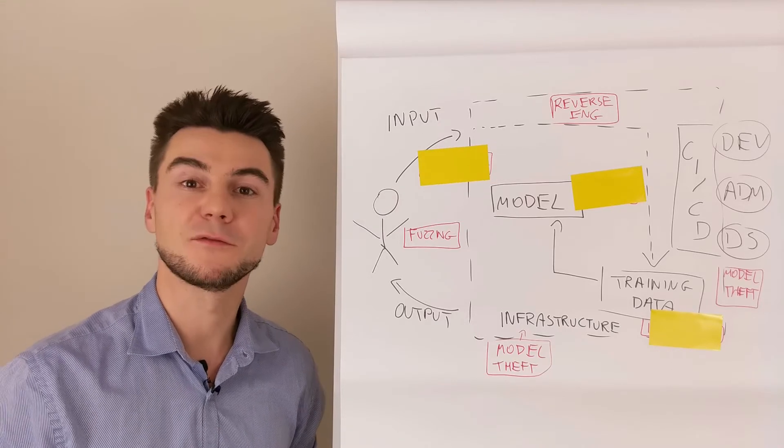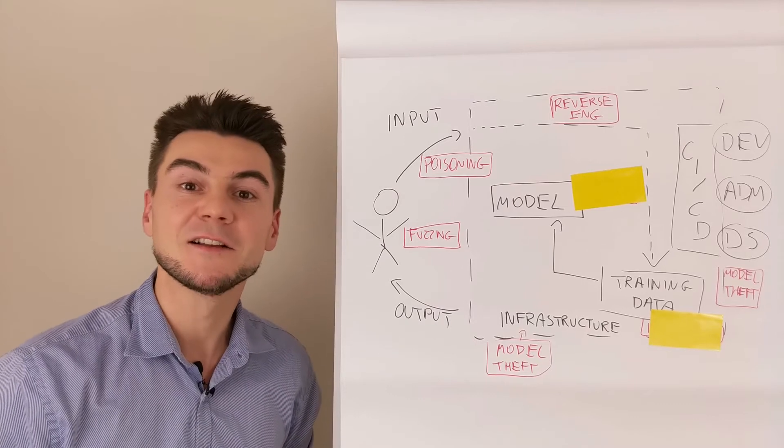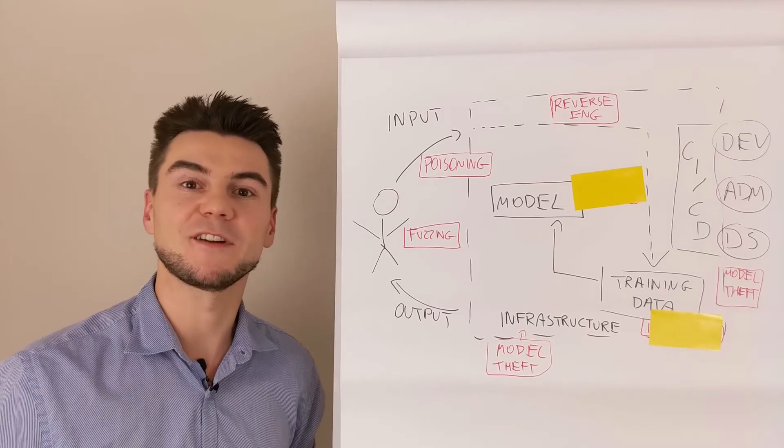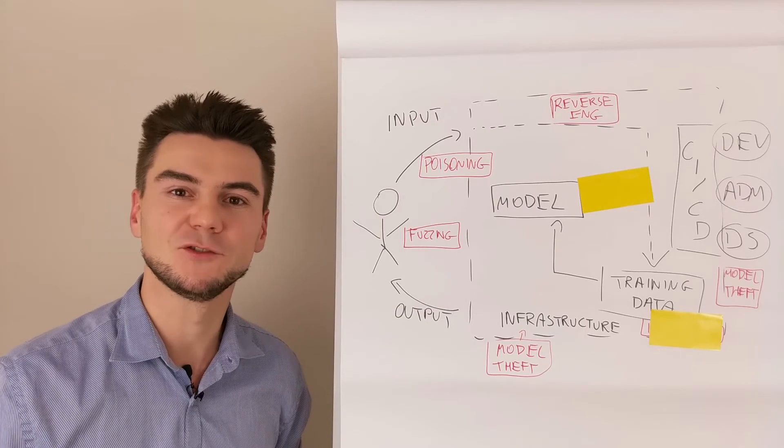Once the attacker has some knowledge about the model, they can execute more attacks. For example, poisoning the system with incorrect data so that it is not effective anymore, or it starts generating financial loss. The infrastructure compromise may lead not only to model theft, but also to model tampering.